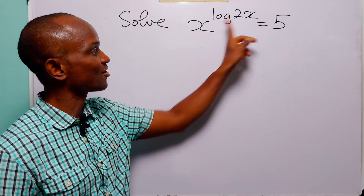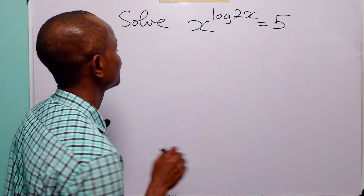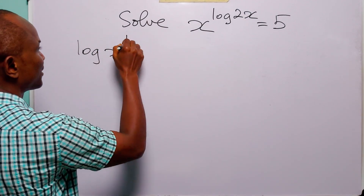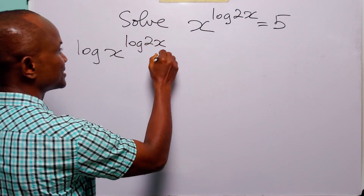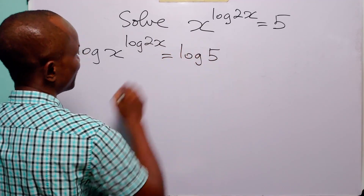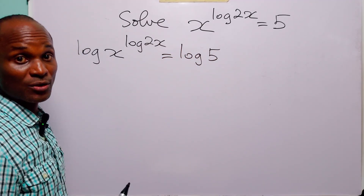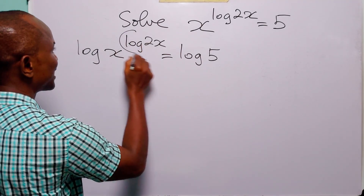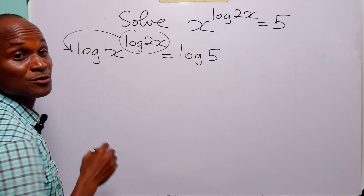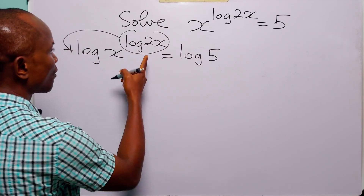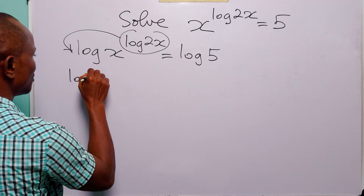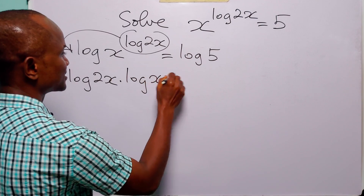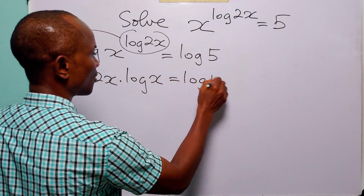So taking log of both sides of this exponential equation, we have log x to the power log 2x is equal to log 5. Now the next thing we are going to do will be to apply the power rule of logarithms — that rule that says we can bring down the exponent to the front to become a multiplier. When we apply this rule, we have log 2x times log x is equal to log 5.